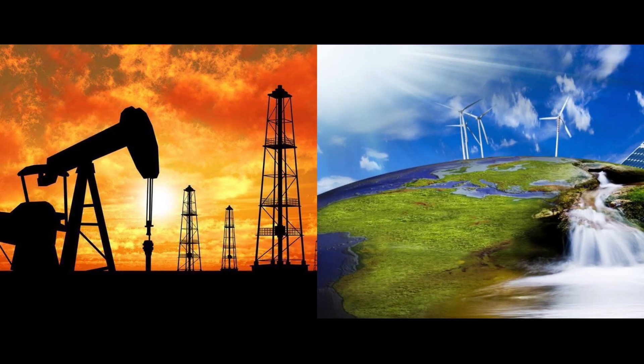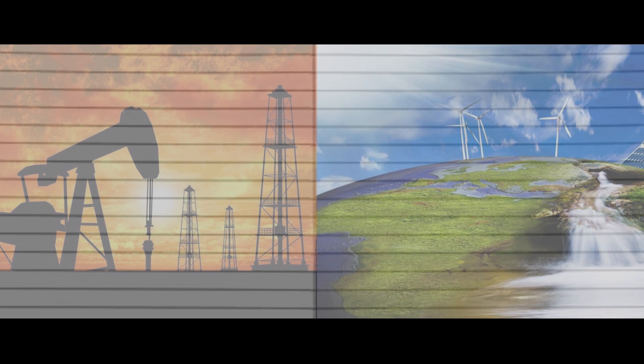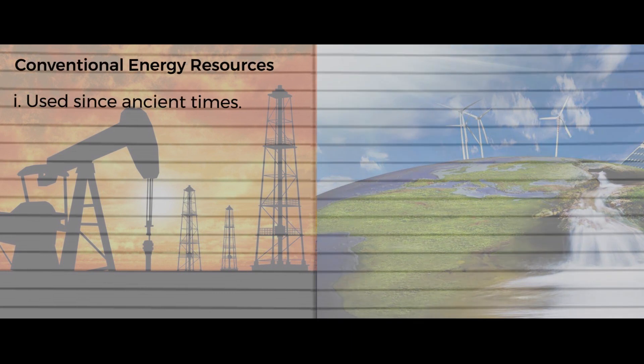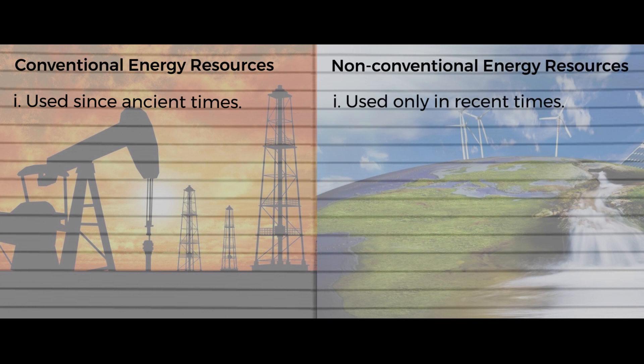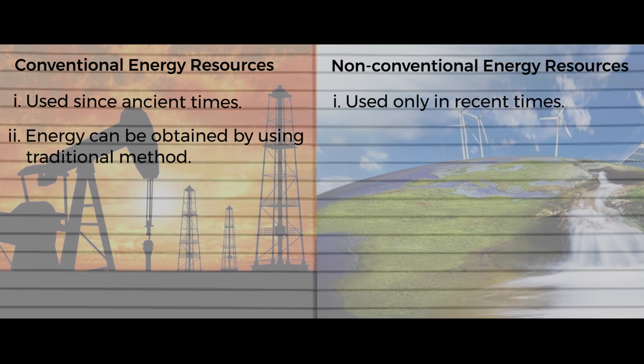Let's look at the differences between conventional and non-conventional energy resources. The first point: conventional energy resources have been used from ancient times, whereas non-conventional are used only in recent times. Conventional energy resources are obtained using traditional methods — for example, going to the forest, getting firewood, bringing it home, and using it.